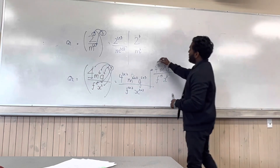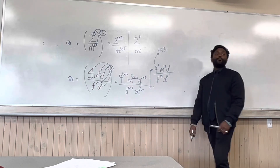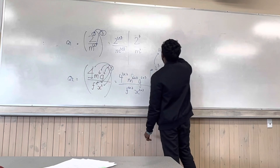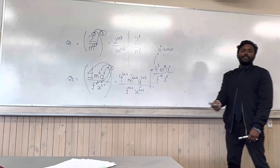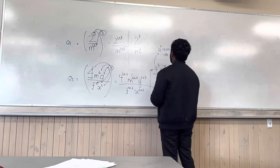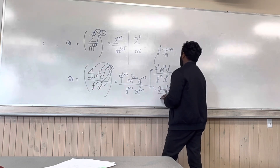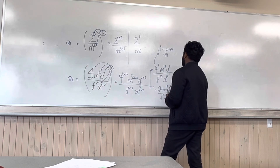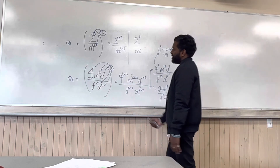A lot of people go, 'oh yeah, that's four times three' — no, it's not actually four times three. Four to the power of three means four times four times four: four times four is 16, and 16 times four is 64. So your simplified answer is 64 m to the power of 18, g to the power of 6, divided by f to the power of 15 and x to the power of 6. That's your answer for that question.